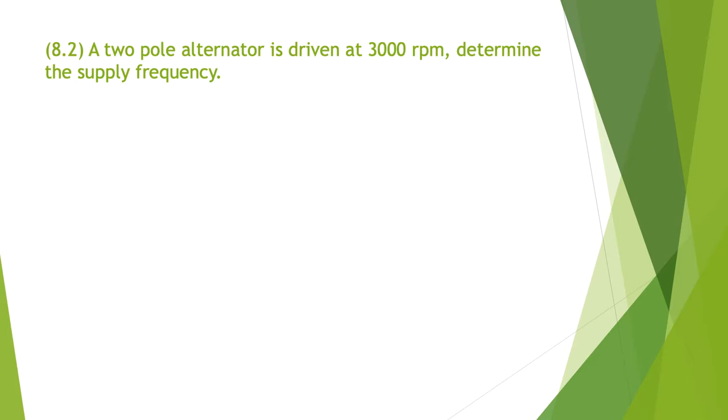Number 8.2: A two pole alternator is driven at 3000 RPM, determine the supply frequency. It's the same equation, we're just going to transpose it. So frequency equals NP divided by 120. So 2 times 3000 divided by 120, and we come out at 50 Hertz frequency.